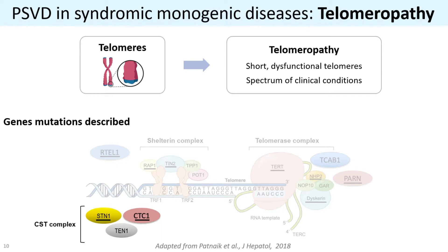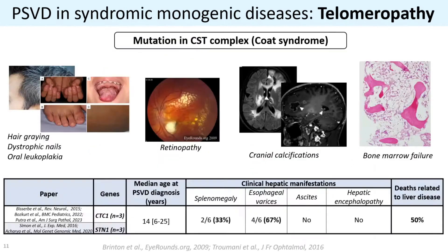We also have some mutations affecting the CST complex, which is involved in DNA synthesis. As a remark, these patients have been described in the literature as CAUT-plus syndrome, and the clinical manifestation is similar to the other telomeropathies, with additional ocular symptoms like retinopathy and cranial calcifications. For these mutations, six cases are reported in the literature, and the outcome was more severe, because 50% of patients died due to gastrointestinal bleeding.